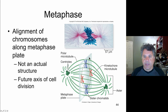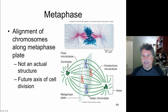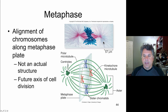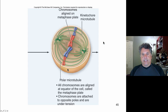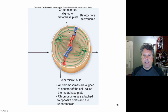Here are the centrioles and the microtubule apparatus being elaborated by them — the mitotic spindle. The chromosomes, now replicated, have lined up independently of each other at the metaphase plate. An example of a polar microtubule is shown here.